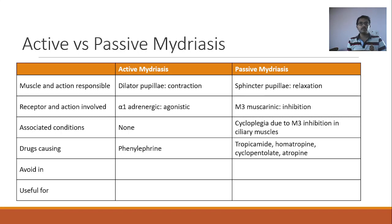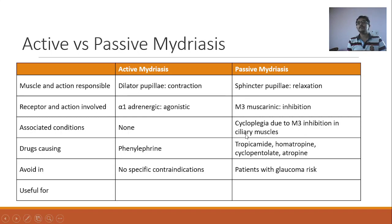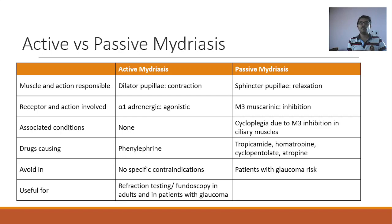Contraindications: for active mydriasis, none. For passive mydriasis, avoid in patients at risk of developing glaucoma. The reason is that M3 blockers also inhibit ciliary muscles, blocking the outflow of aqueous humor, leading to increased intraocular pressure. So active mydriatics are useful for refraction testing and fundoscopy in almost all patients, especially those at risk of developing glaucoma. Passive mydriasis with cycloplegia is called cycloplegic refraction and is generally used for refraction testing in children.